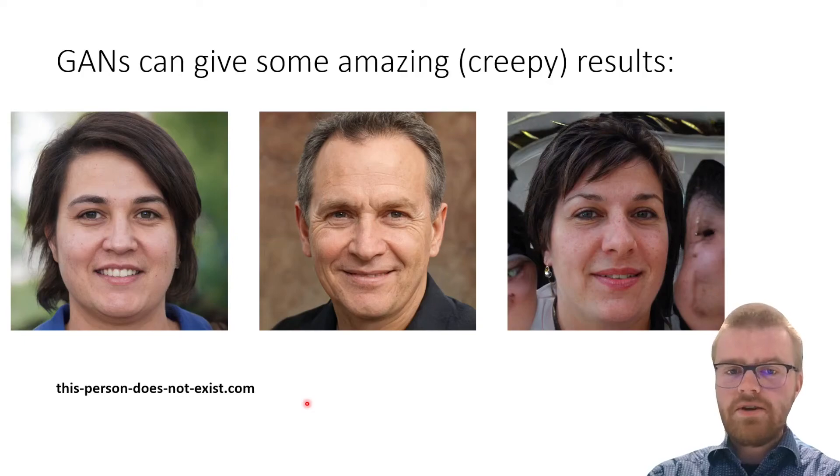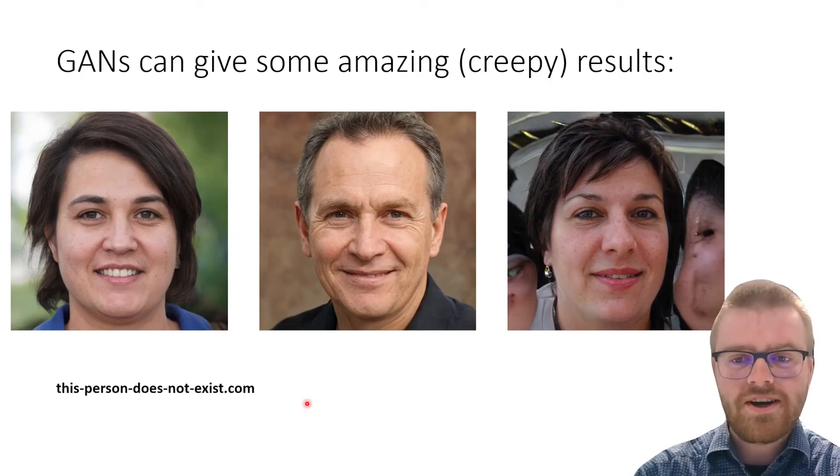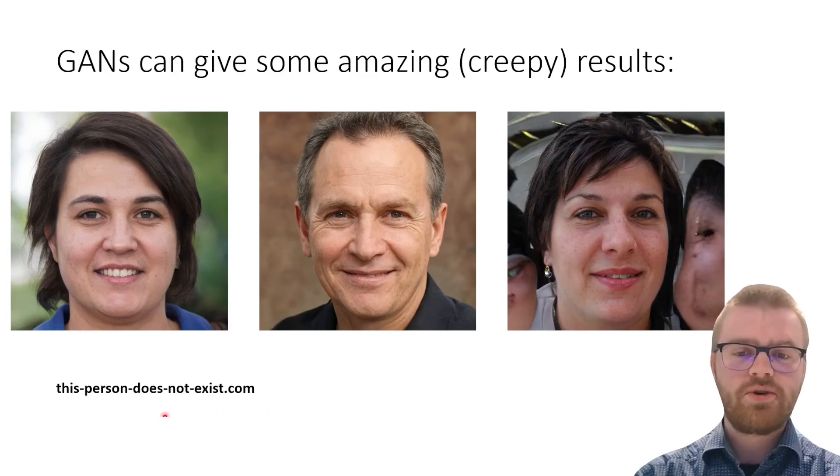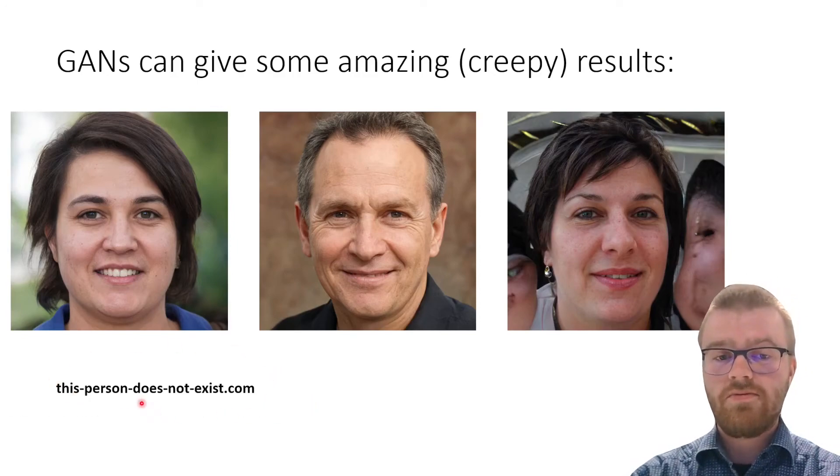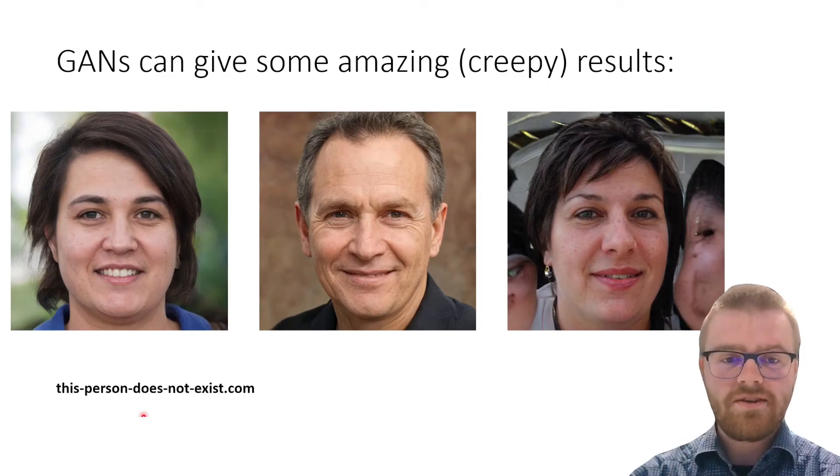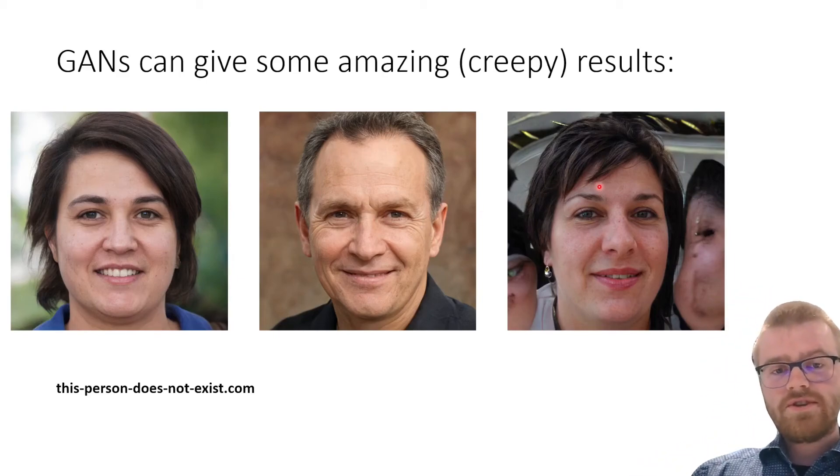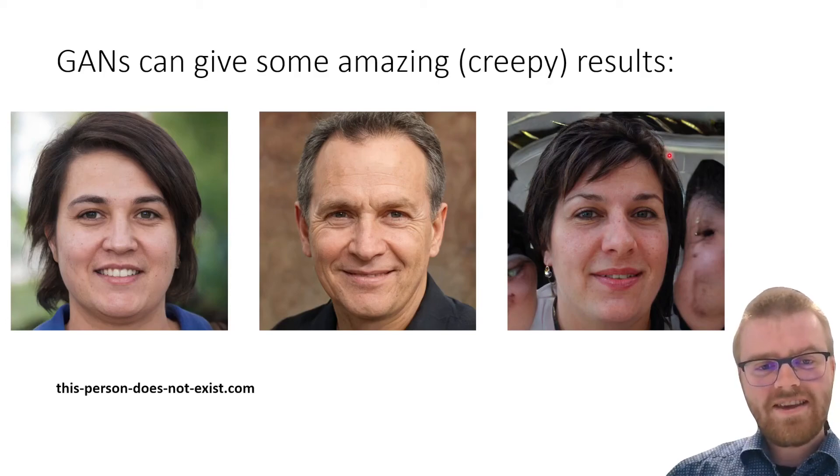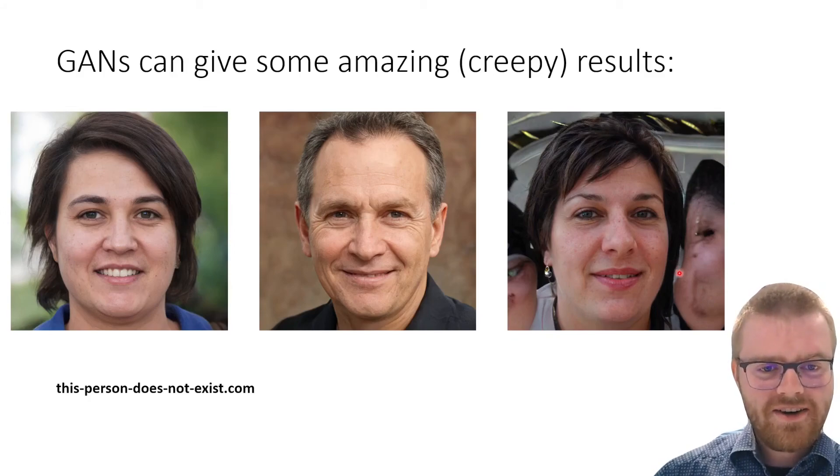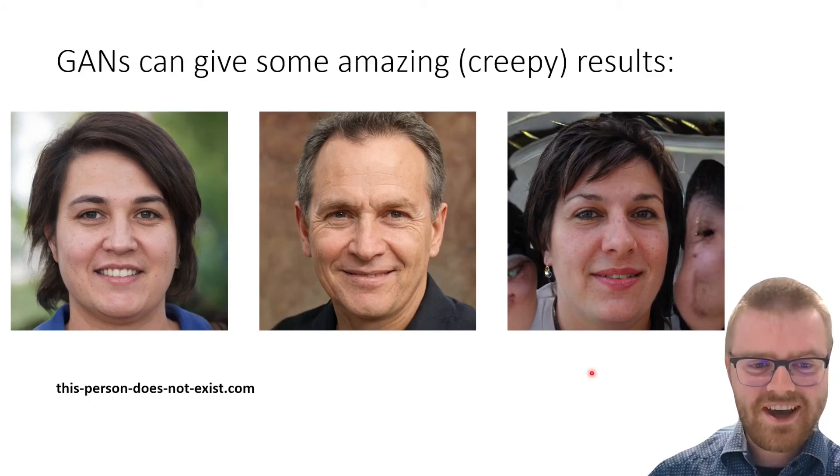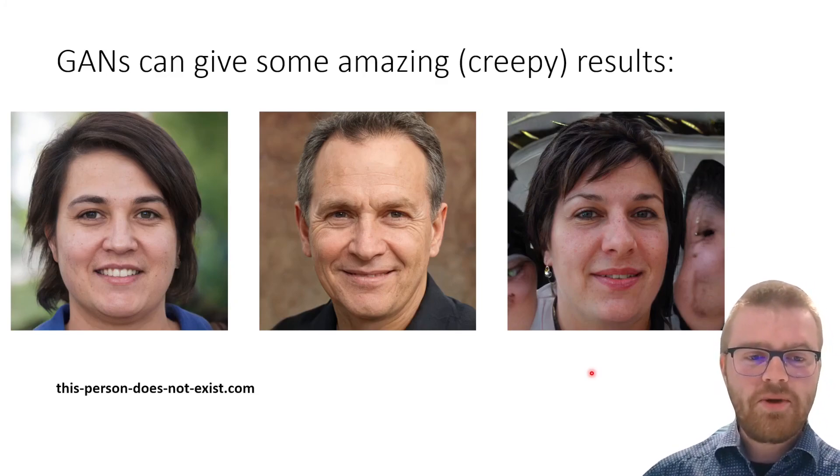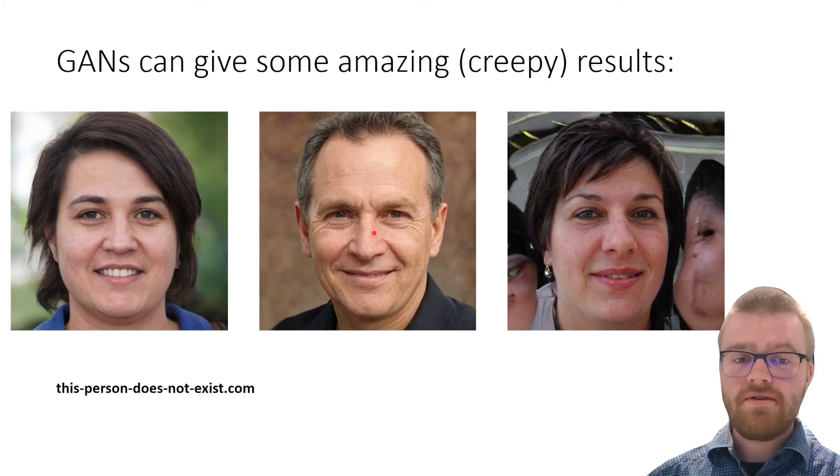GANs can give very good, although slightly creepy results. Here I show some examples of the website thispersondoesnotexist.com, which is a great website. I really recommend going there. These are examples given by the NVIDIA StyleGAN. Really, these are very believable, true-to-life pictures. But what you often see happening is that the background is off. This background is warped here. There are strange things here on the left and right which are slightly creepy, in my opinion. But these are artifacts. Most of the images are very, very good.